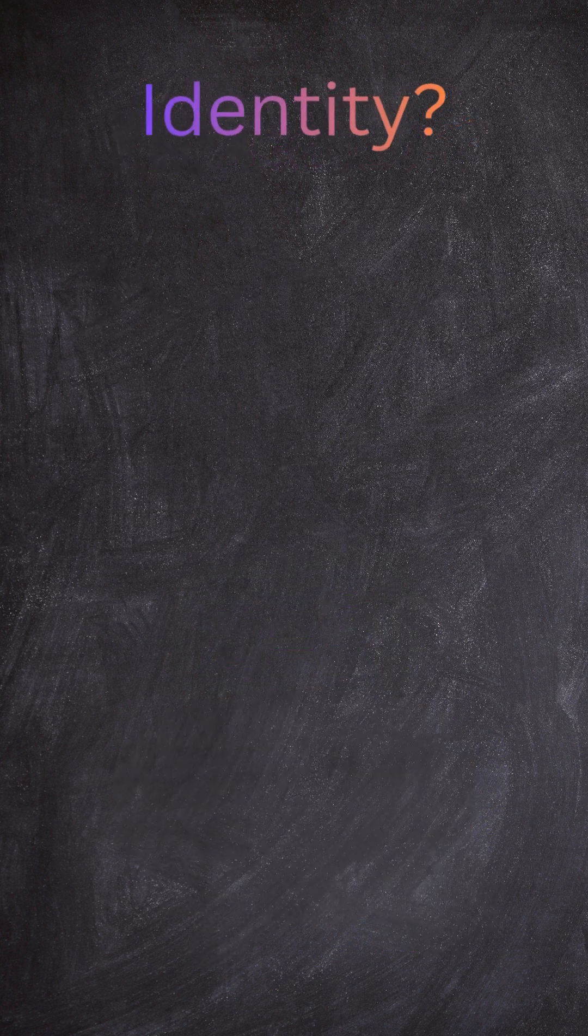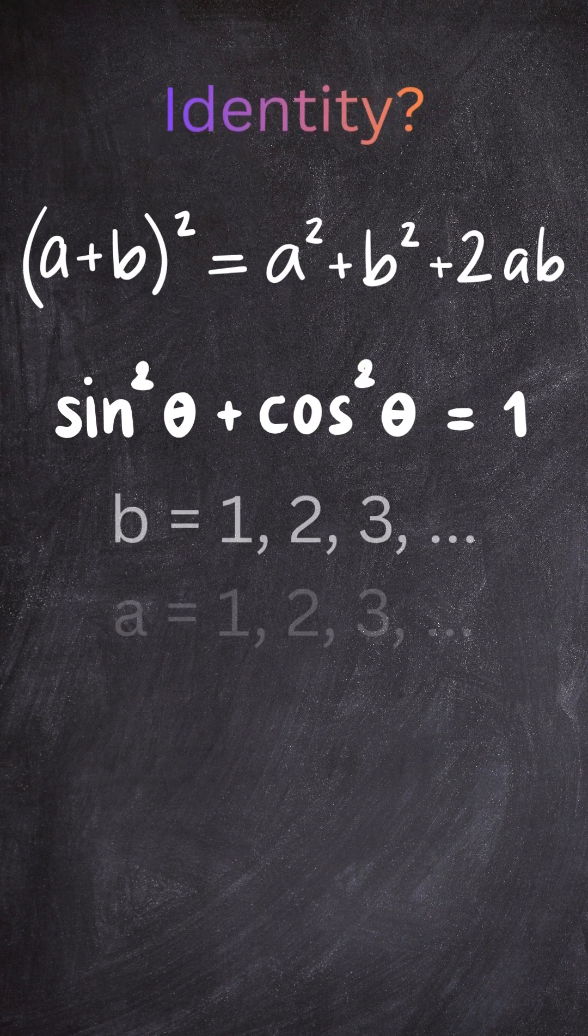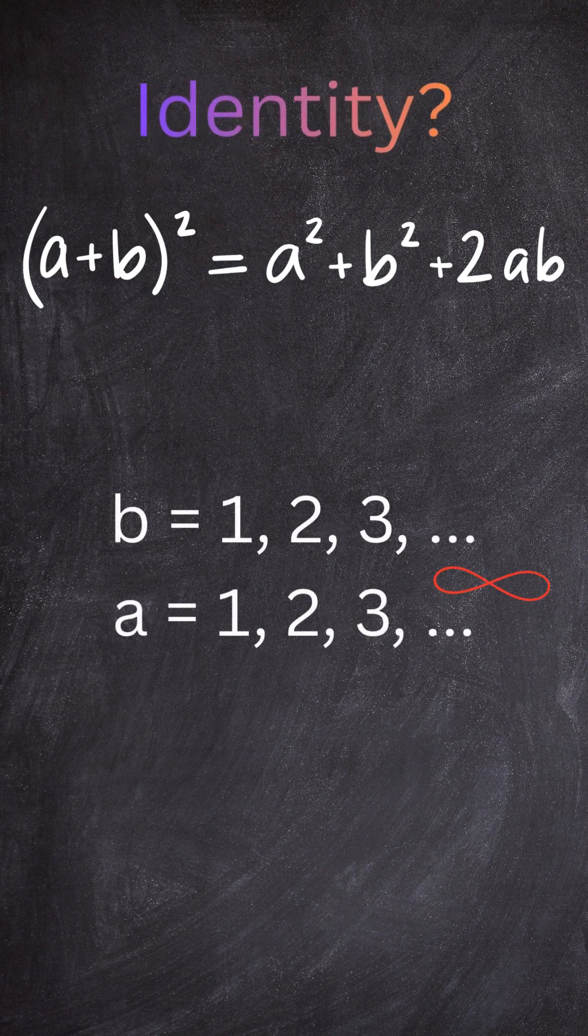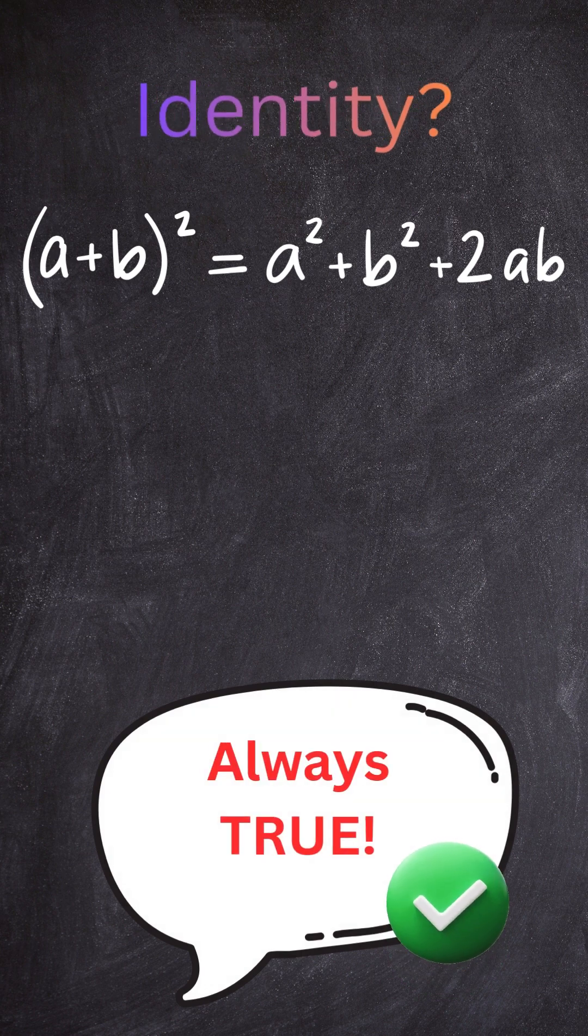An identity is a fact. It's always true, no matter what numbers you pick. Like, a plus b squared equals a squared plus 2ab plus b squared. That works for every value of a and b. An identity is always true.